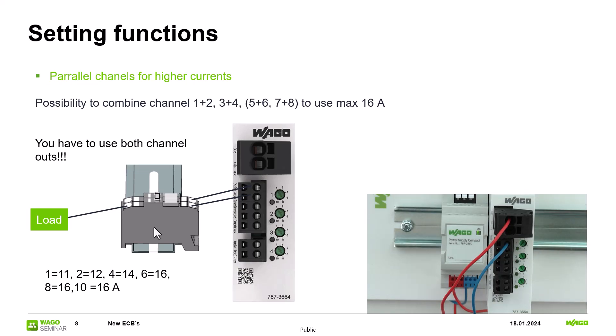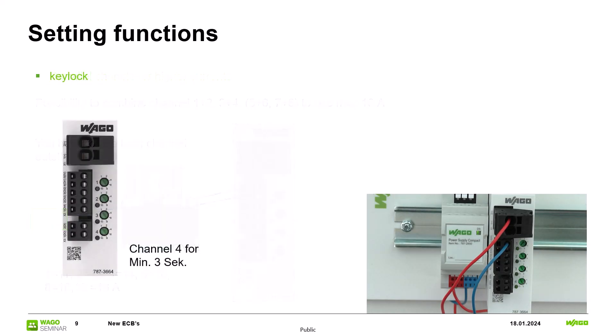The last function I want to show you is a key lock. If you press the button channel number 4 for at least 3 seconds all buttons are locked. You can indicate this by the frequently running orange LEDs on the ECB. Pressing channel 4 again for at least 3 seconds you deactivate the key lock.